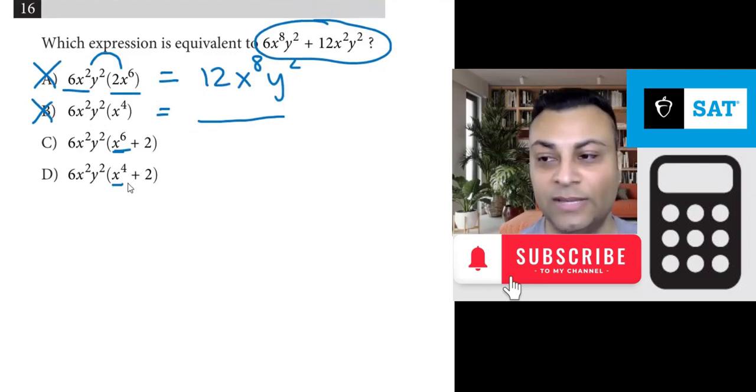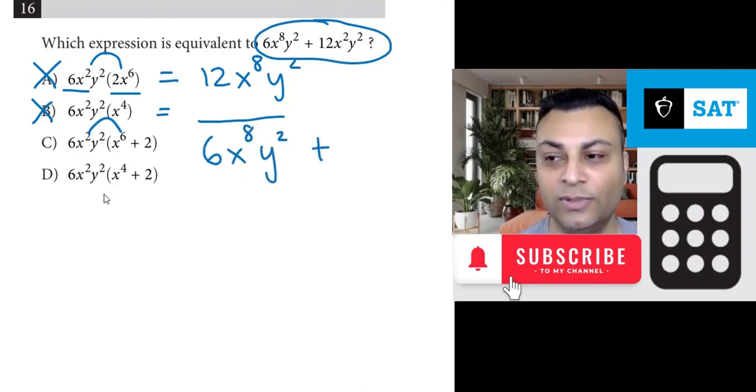So let's go and expand option c. And you expand this way. You get 6, x squared and x to the sixth you get x to the eighth. And then y squared. And then plus the second term. But let's not worry about that. We'll just do this one right now.